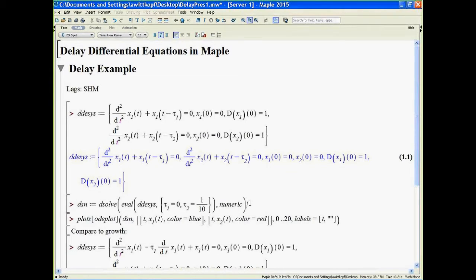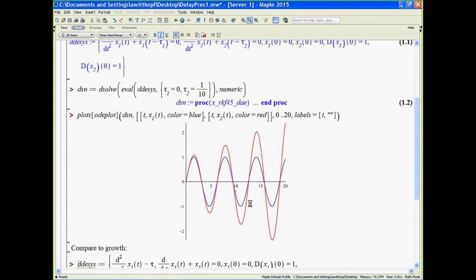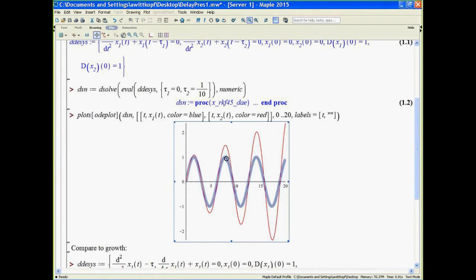So to solve, we simply call dsolve, evaluating the DDE system with the appropriate delays, and then produce a plot with odeplot. The blue curve without the delay is the familiar result for the simple harmonic oscillator. But the red curve with the tenth of a second delay shows a growth in the solution.